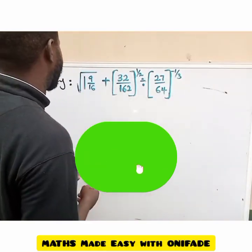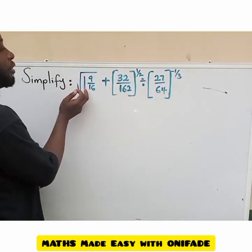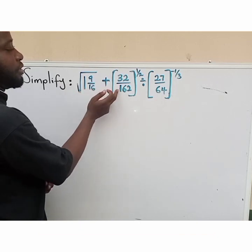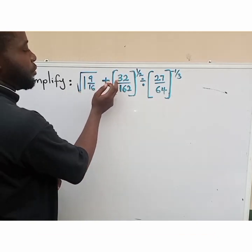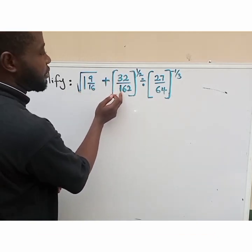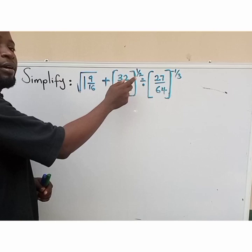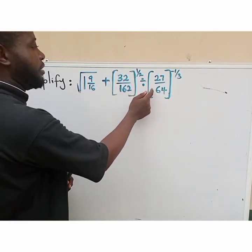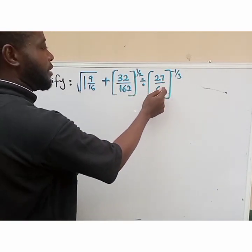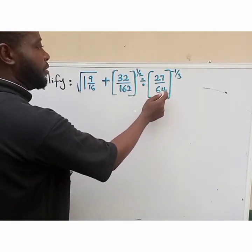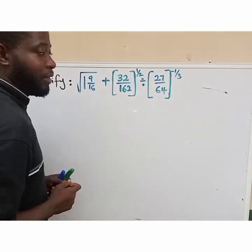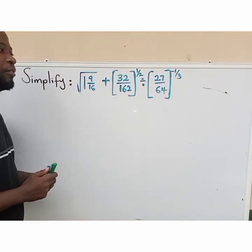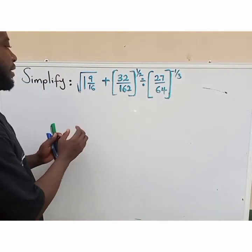The question says: simplify root of 1 whole number 9 over 16, plus (32 all over 162) raised to the power of 1 over 2, divided by (27 all over 64) raised to the power of minus 1 all over 3.